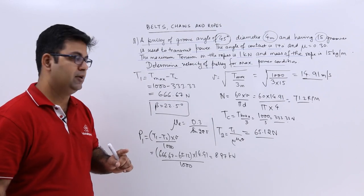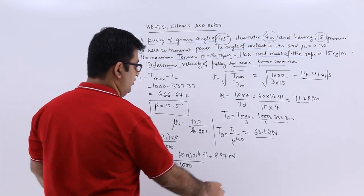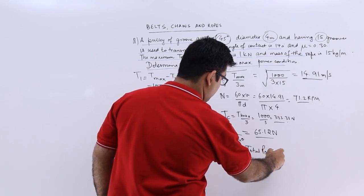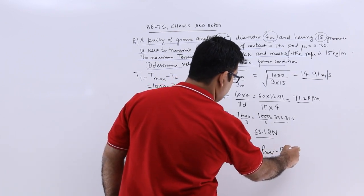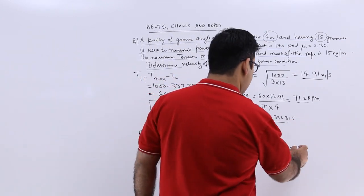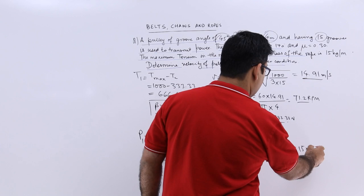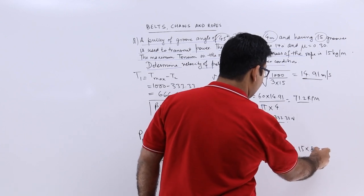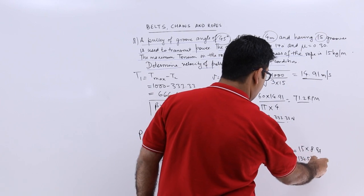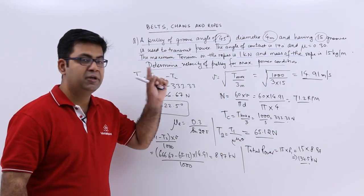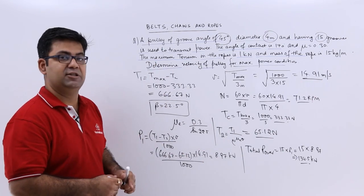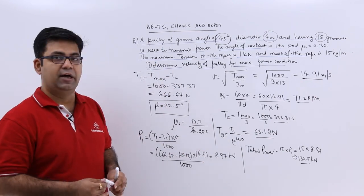You have a total of 15. So total power would be 15 into P1. So that would be 15 times 8.97 which gives you 134.5 kilowatts. So that is the maximum possible total power that can be transmitted through this arrangement.